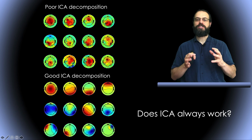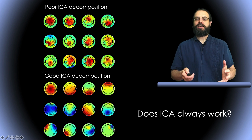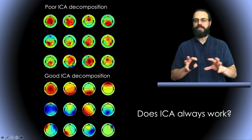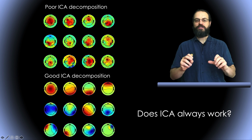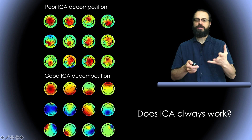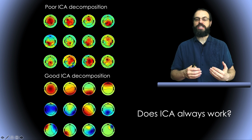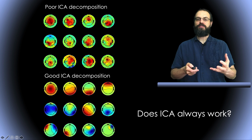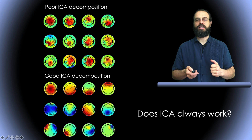The first misconception is that ICA always works. You have EEG data and sometimes, whatever you do, you can't get a proper ICA decomposition. By a proper ICA decomposition, I mean a decomposition with scalp maps which are smooth and can be represented by equivalent dipoles. Sometimes they still look like a checkerboard. This dramatically depends on the quality of the data — if the data is of very low quality with a lot of noise, you might end up with that. But sometimes we don't know why we can't get a decent decomposition. So ICA doesn't always work 100%.